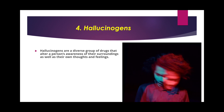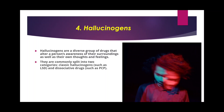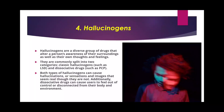The fourth most common abused substance is hallucinogens. Hallucinogens are a diverse group of drugs that alter a person's awareness of their surroundings as well as their own thoughts and feelings. They are commonly split into two groups: classic hallucinogens such as LSD, and dissociative drugs such as PCP (phencyclidine). Both types can cause hallucinations — sensations and images that seem real though they are not.